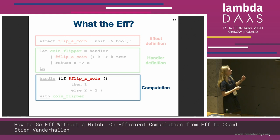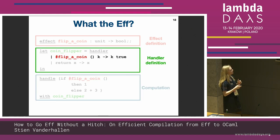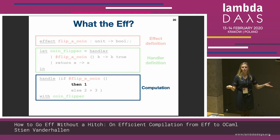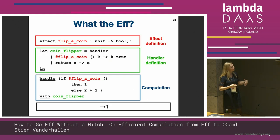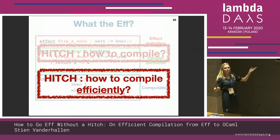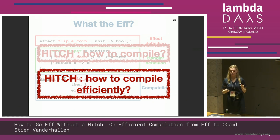Because we are using this coin flipper as a handler for the computation, we evaluate this coin flipping to true, meaning we evaluate the then branch, which is very simple — it's just one. So this entire program evaluates to one. This is easy, but now how do we compile this?